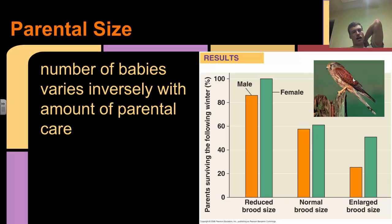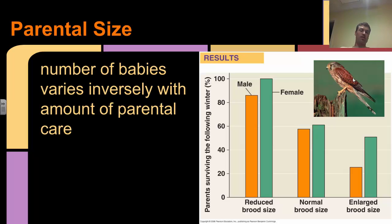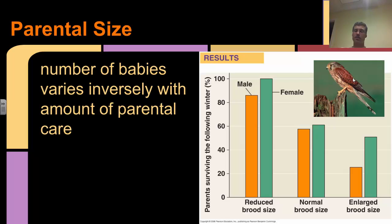Parental care is also going to affect how a population comes out. The number of babies in a brood varies inversely with the amount of parental care: the less babies you have, the more parental care you can provide. If you have more parental care, that means you're going to have a lower life expectancy because you're putting more energy into taking care of your offspring. Whereas if you have a larger brood - more offspring - you're going to spend less time taking care of them, so you have more time taking care of yourself. This obviously affects population survivorship.